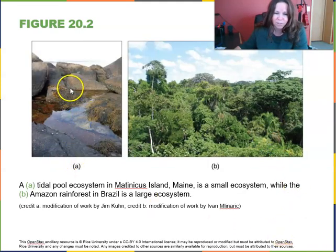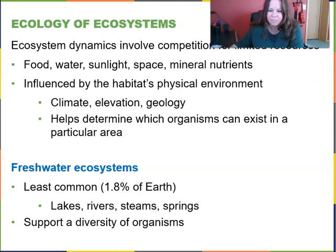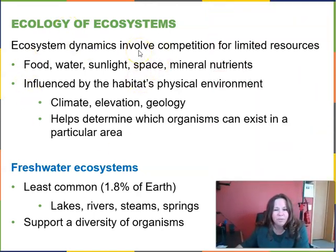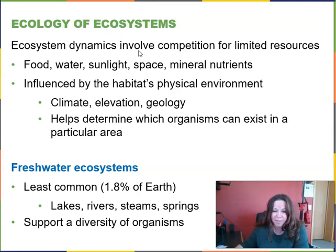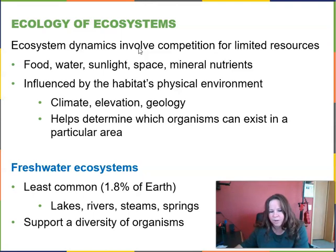Here's an example of that tidal pool and the tropical rainforest in Brazil. Ecosystem dynamics involve competition for the limited resources within the ecosystem, including things organisms need like food, water, sunlight, space, and mineral nutrients. It's influenced by the habitat's physical environment such as climate and elevation, which helps determine which organisms can actually exist in a particular area. Freshwater ecosystems tend to be the least common on earth, making up only about 1.8%, and include lakes, rivers, streams, and springs.